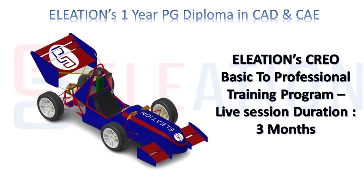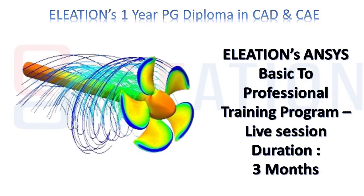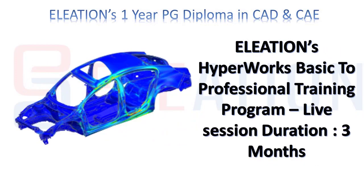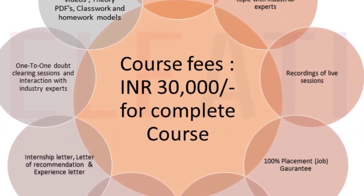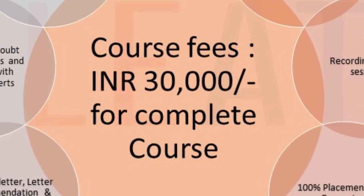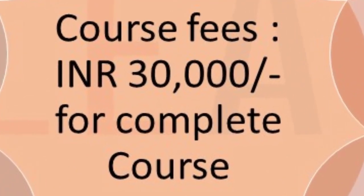The course duration of Eliation's Creo online live interactive training program is 3 months. The course duration of Eliation's Ansys online live interactive training program is 3 months. The course duration of Eliation's HyperWorks online live interactive training program is 3 months. Course fees for Eliation's 1-year post-graduation diploma in CAD and CAE is Rs. 30,000.